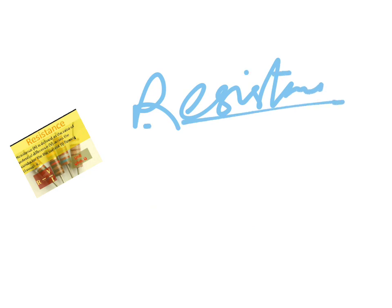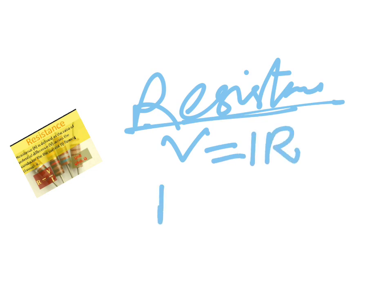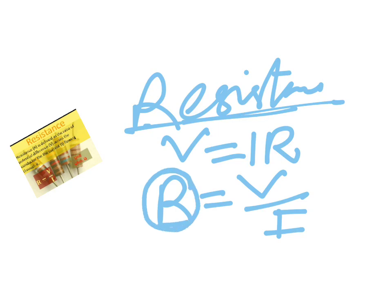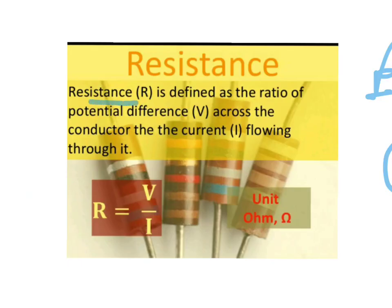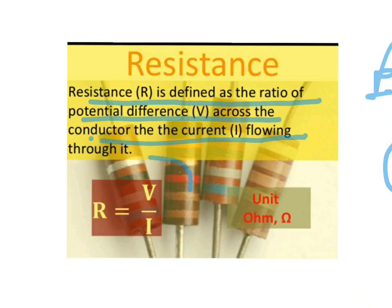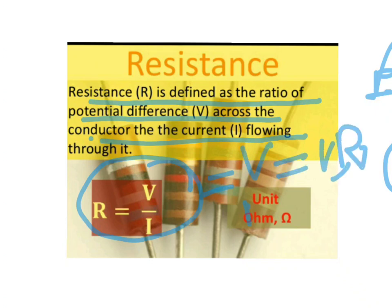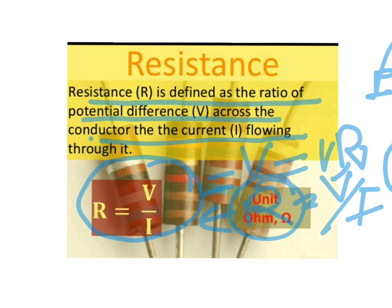Resistance is defined as follows: from V = IR, we get R = V / I. So resistance is mathematically defined as the ratio of voltage to electric current. The SI unit of resistance is ohm, denoted by the symbol Ω.